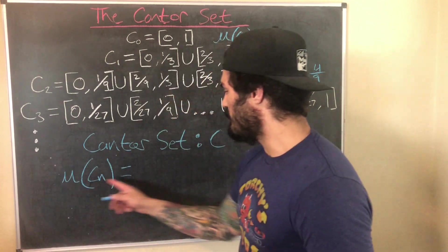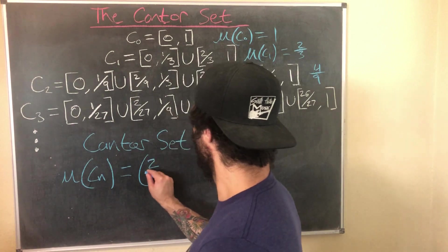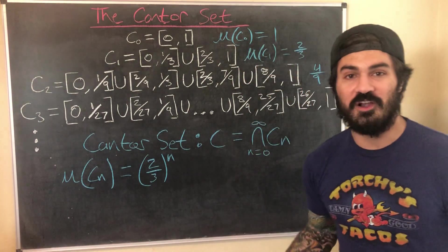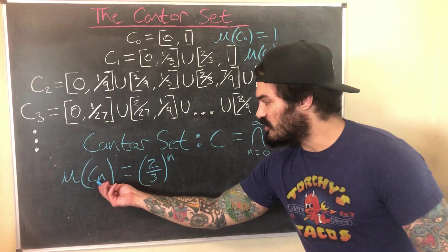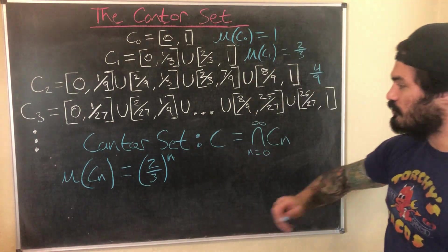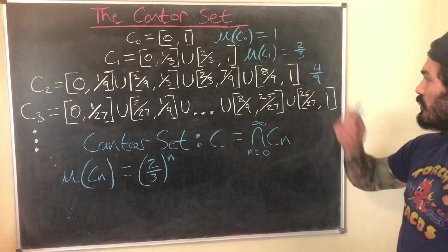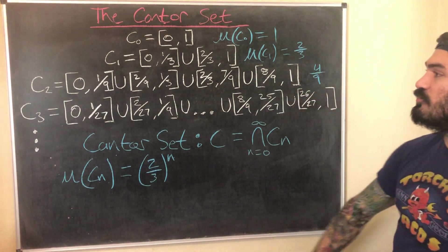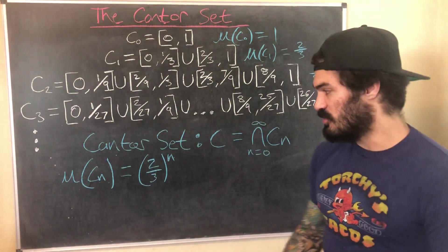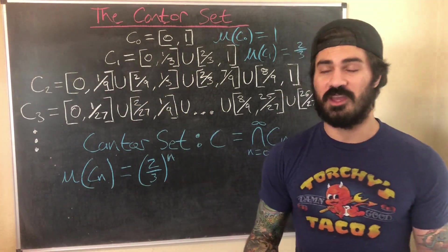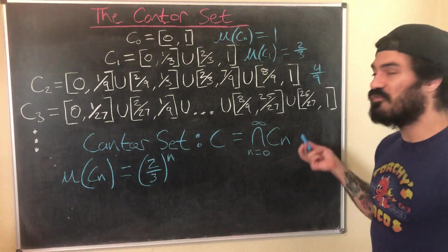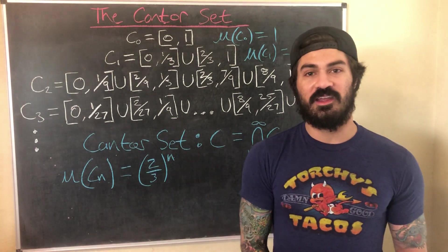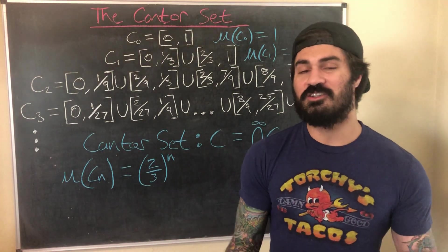It turns out the measure of Cₙ is (2/3)ⁿ. We can verify: the measure of C0 is (2/3)⁰ = 1 ✓; C1 gives (2/3)¹ = 2/3 ✓; C2 gives (2/3)² = 4/9 ✓. This holds for any of these sets. Now, since the Cantor set is the infinite intersection, we need to find its measure — and for this we rely on a property called continuity from above.